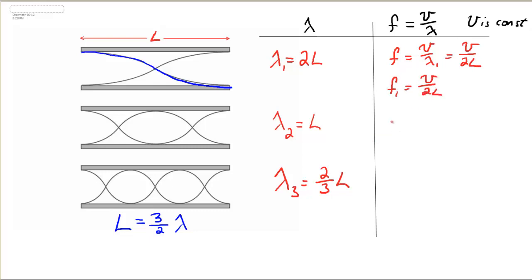Similarly, I can look at F2. F2 will be V over lambda 2, which is L. And F3 will be V over 2L.